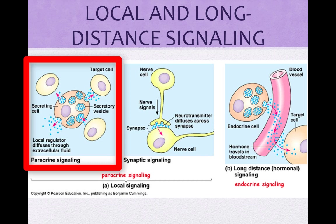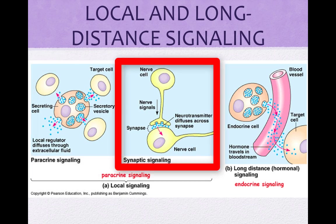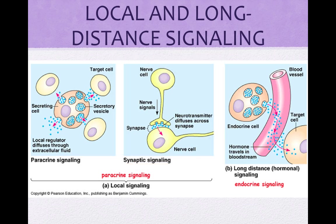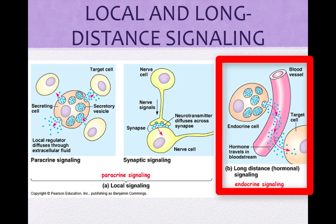In the animal nervous system, this is a type of synaptic signaling. The nerve cell secretes neurotransmitters to a nearby cell that almost touches the first cell. Electrical signals transmit the length of the nerve cell and trigger secretion of the neurotransmitter into the synapse. Local signaling in plants is not as well understood; because of cell walls, they use different mechanisms. Hormones are used by both plants and animals, and they use chemical signals for long-distance communication.